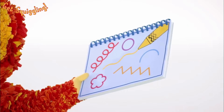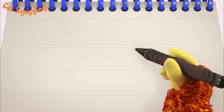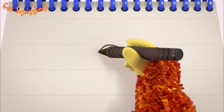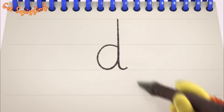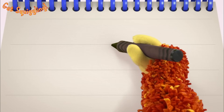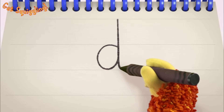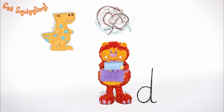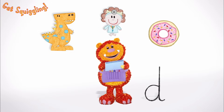Have you got your squiggle pads and squiggle sticks ready? Let's get squiggling! Holding your squiggle stick like this, move it round, up, down and flick — the letter D! Shall we squiggle some things that start with the letter D? A dinosaur, a door and a donut — they all begin with the letter D!